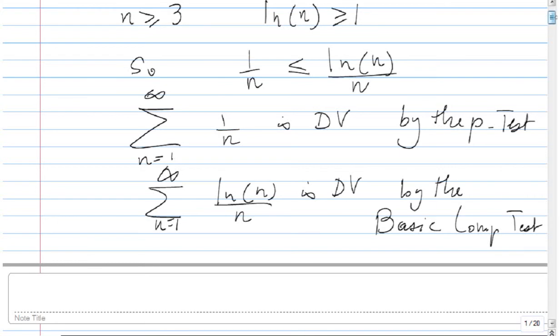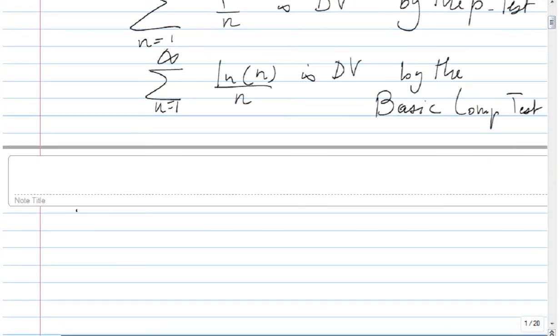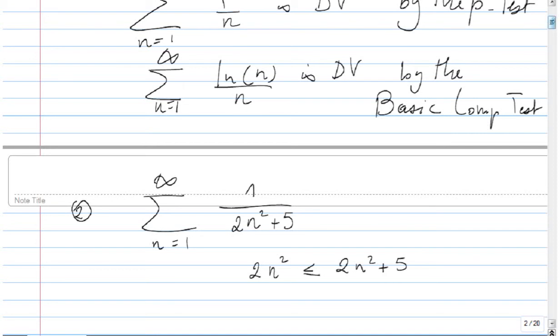Okay, the next one is problem number 2: Sigma of 1 over 2 n squared plus 5 from 1 to infinity. For this one it's easy to see that 2 n squared is smaller than 2 n squared plus 5, which implies that 1 over 2 n squared plus 5 is less than 1 over 2 n squared.